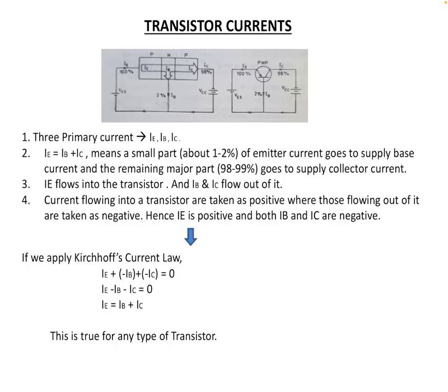Let me see one point. There are three primary currents: IE, the emitter current; IB, the base current; and IC, the collector current.